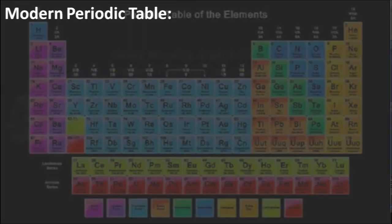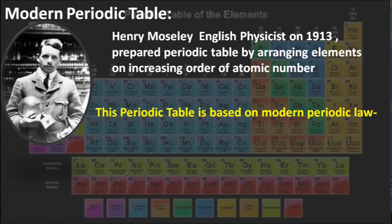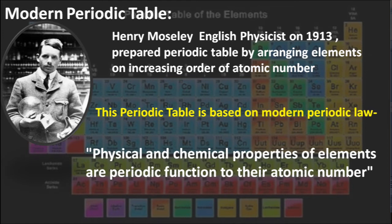Modern periodic table: Henry Moseley, an English physicist, in 1913 prepared the periodic table by arranging elements in increasing order of atomic number, called the modern periodic table. This periodic table is based on the modern periodic law, which states that physical and chemical properties of elements are a periodic function of their atomic number. This means atomic number is the main fundamental property that determines the properties of elements.